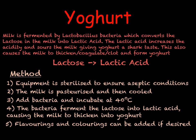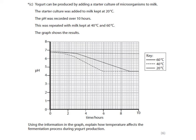It is important when carrying out tests on yoghurt production that the milk is pasteurised to ensure no other bacteria are present. Here is an exam question on yoghurt production. We are told it can be produced by adding a starter culture of microorganisms to milk. One mixture was kept at 20°C (the solid line), another at 40°C (the dashed line), and another at 60°C, with pH recorded over 10 hours. Using the information in the graph, explain how temperature affects the fermentation process during yoghurt production. Pause the video and attempt this 6-mark question.